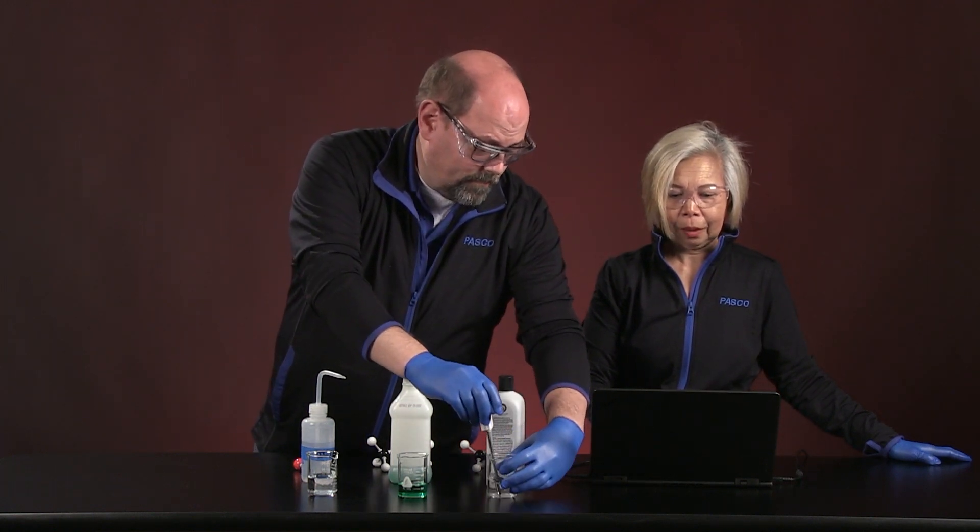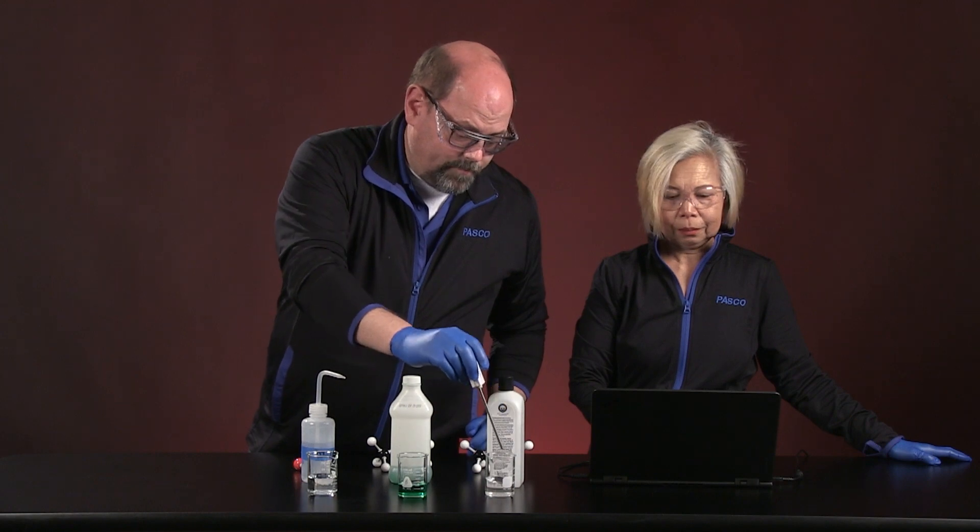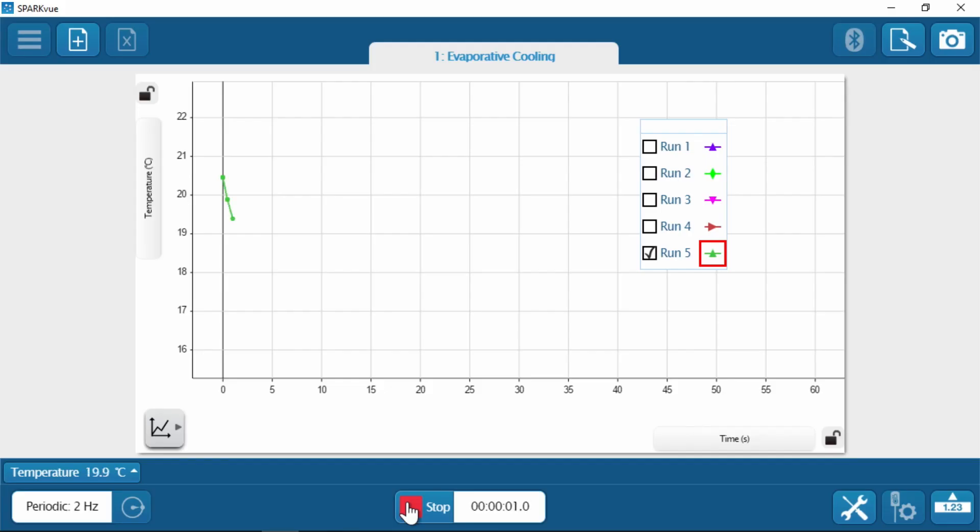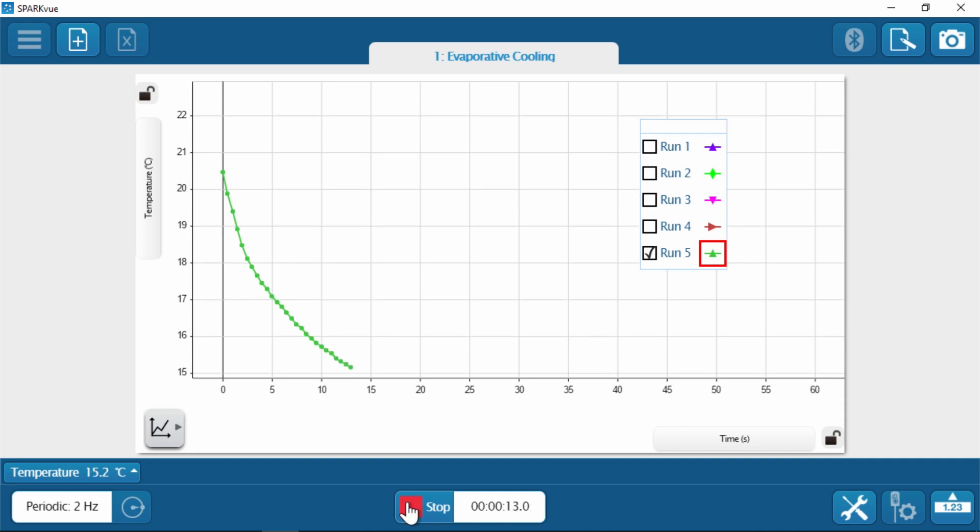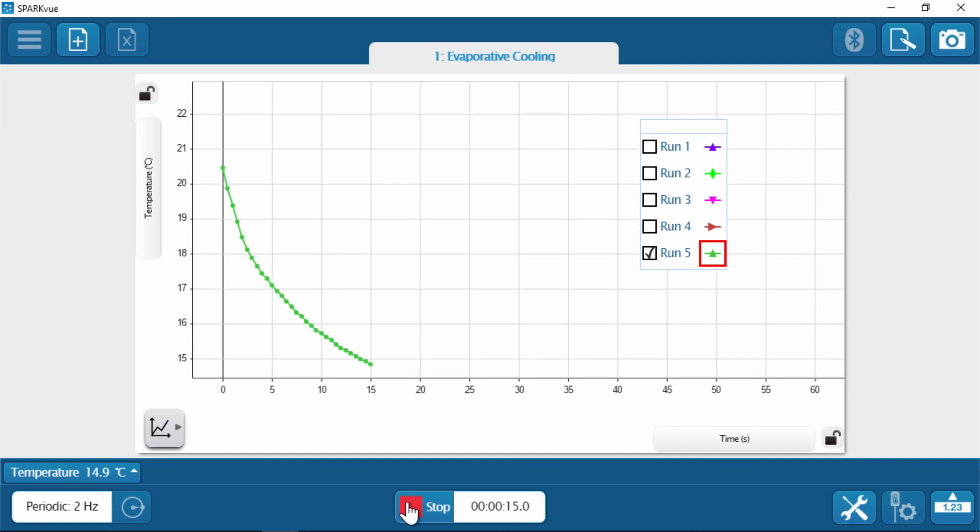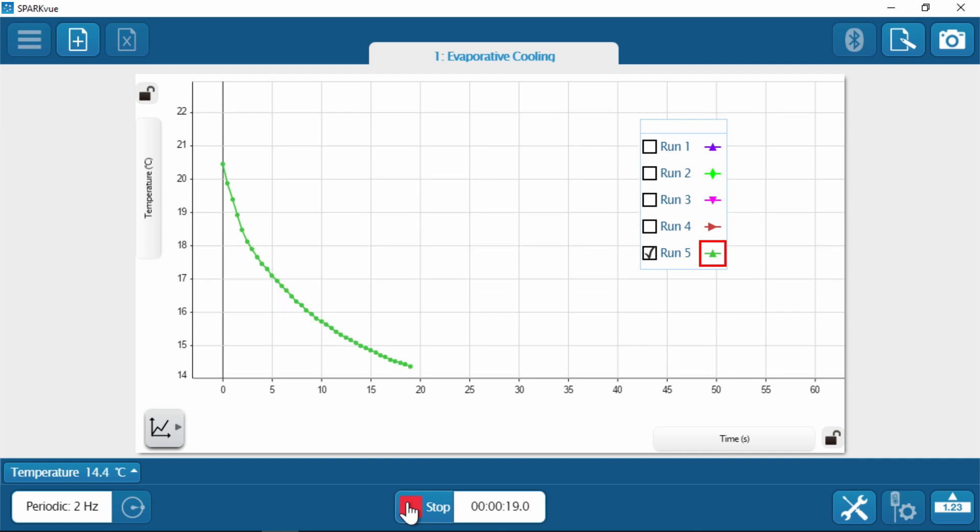Okay. Ready? All set? Yep. Go. This is acetone. Acetone is in fingernail polish remover. So, all things that you might be able to find at your home.